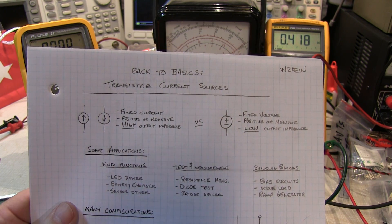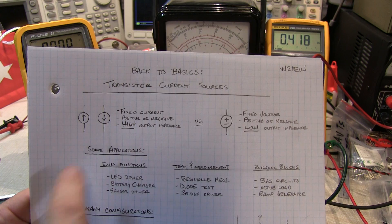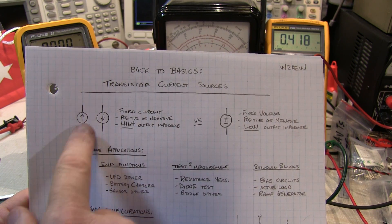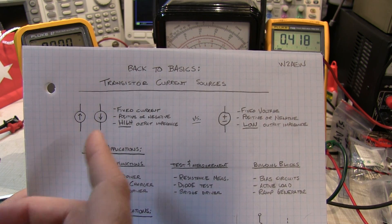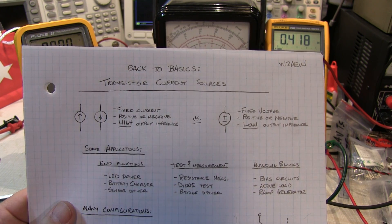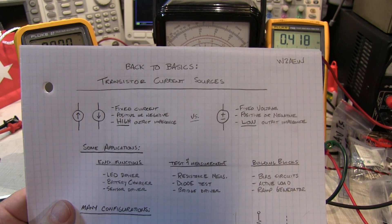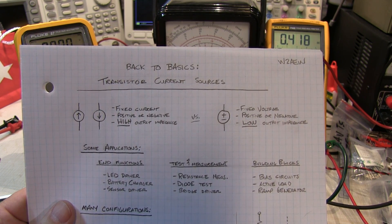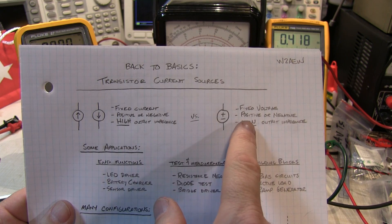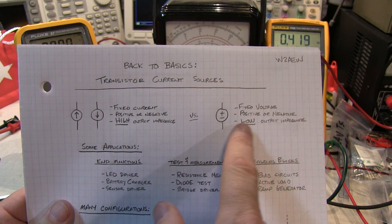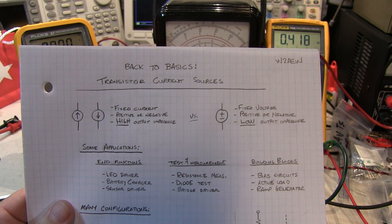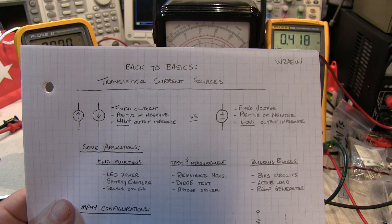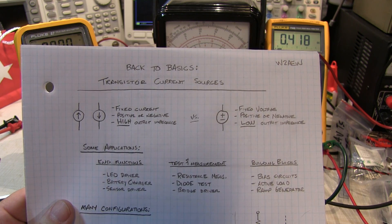Fixed current sources can also be very useful. They can be positive or negative, meaning they can source or sink current. Typically when you set them up in a circuit, they're going to be at some fixed current that might be adjustable. And unlike a voltage source, instead of having a very low output impedance, they have a very high output impedance.